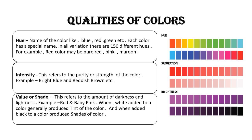The third quality is value. Value means the darkness and lightness of color. Some colors appear very dark and some colors appear light. For example, red is dark and baby pink is light.